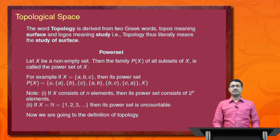Note that if X consists of n elements, then the power set consists of 2 to the power n elements. If n equals a natural number, meaning the set contains elements 1, 2, 3, and so on, then the power set is obviously uncountable.